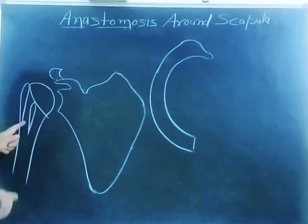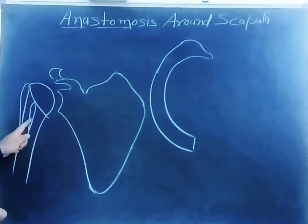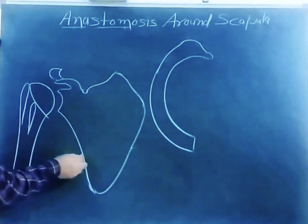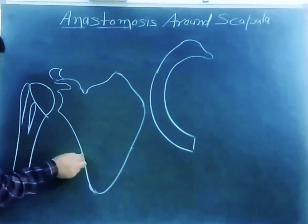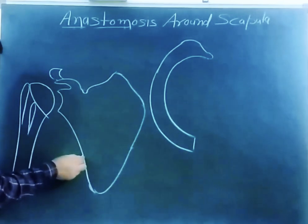This is the bicipital groove, here is the inner lip of the bicipital groove, and from the lower part of the lateral border of the scapula the muscle is attached.